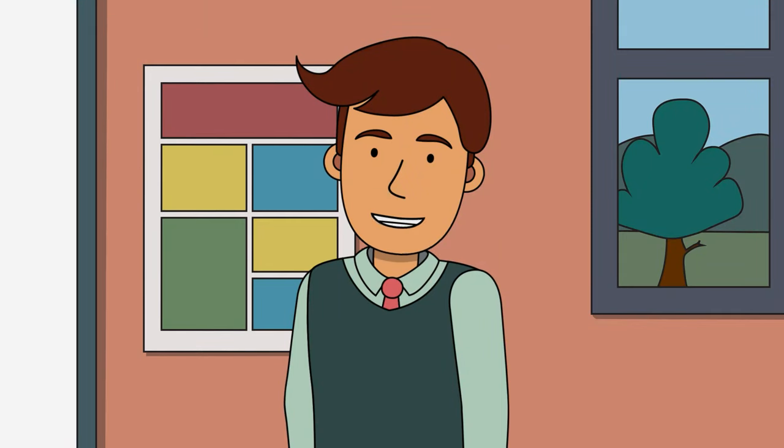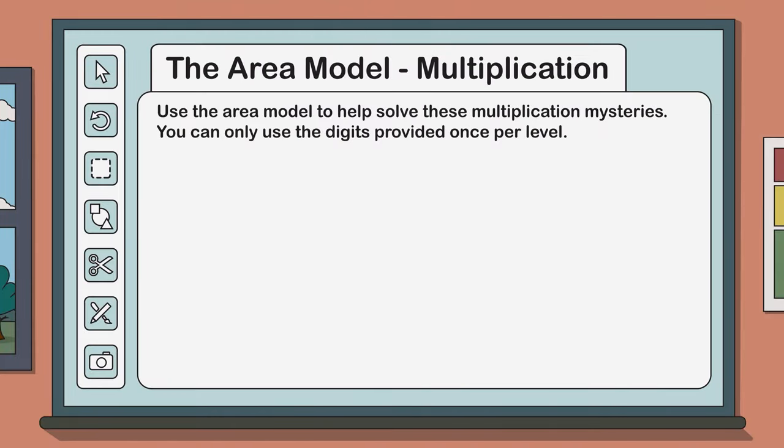Now that we have a decent understanding of the area model for multiplication it's time to test it out. Here's a couple of multiplication problems for you to tackle across three levels. Level 1. In this problem you can only use the digits 1, 3, 5 and 7.